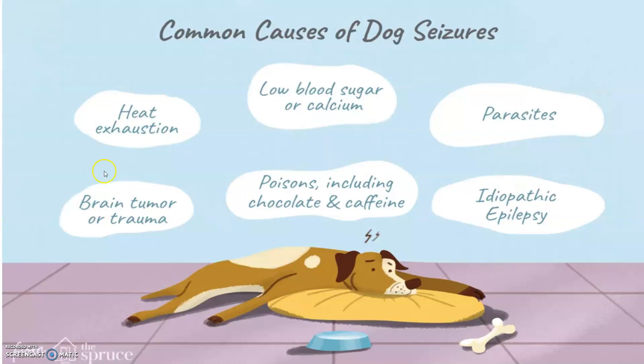Common causes of seizure include heat, exogenous toxins, low blood sugar, calcium imbalance, high or low blood pressure, brain tumor, poisons including chocolate, pain, idiopathic epilepsy, and parasites.